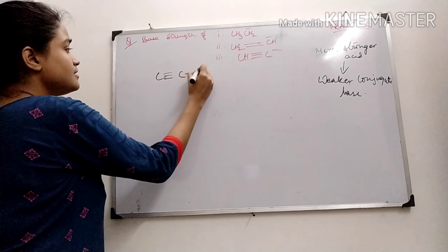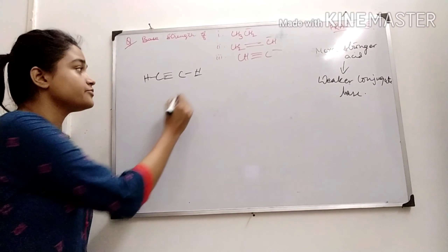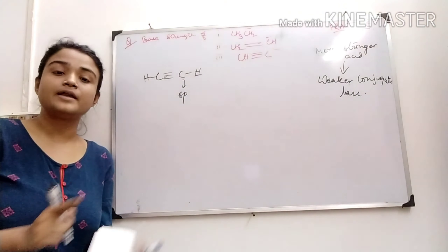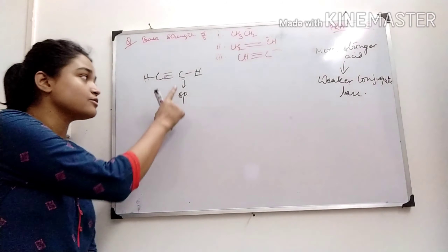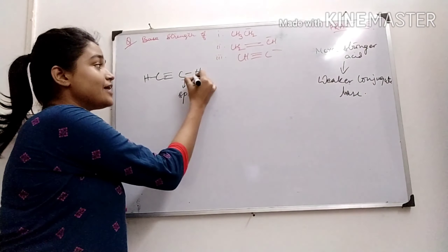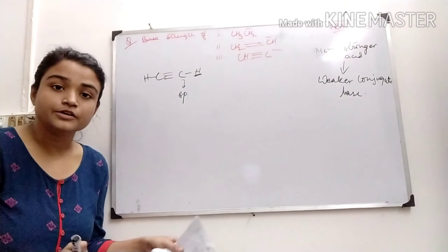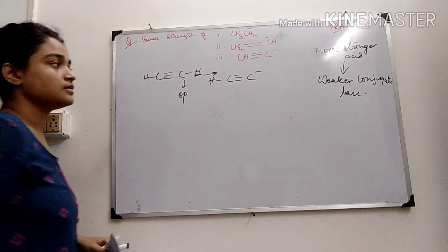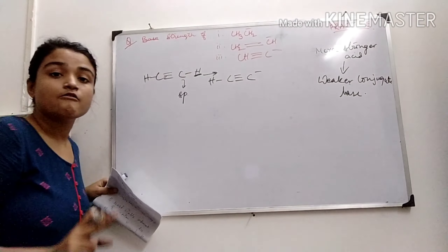For ethyne, this hydrogen is highly acidic. This is because the carbon is SP-hybridized with 50% S-character, which is more penetrating. S is more penetrating than P, so the orbital is lying closer to the nucleus. When this hydrogen becomes acidic due to the attractive force of the nucleus, it will be easily liberated. So this is a very strong acid, and its conjugate base will be weaker.